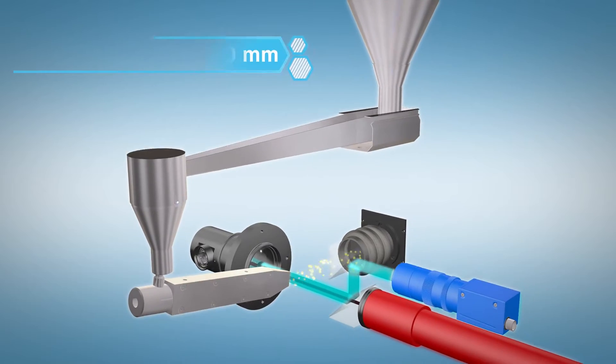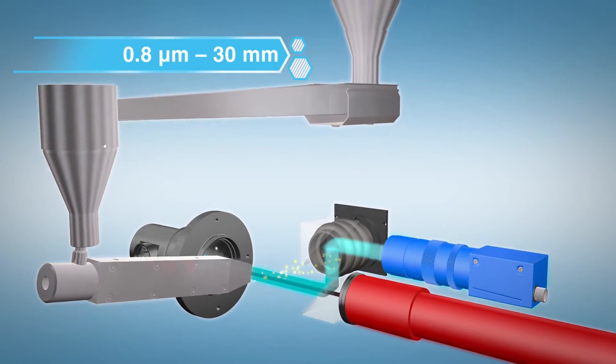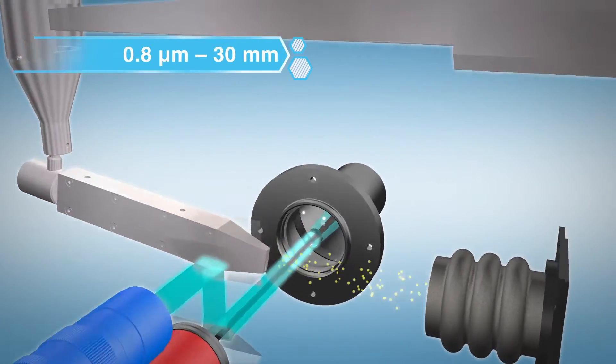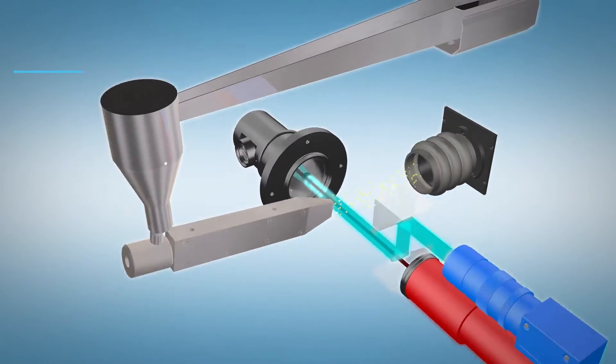Depending on the instrument, particles in a size range from 0.8 microns to 30 millimeters are characterized as powders, granules, or suspensions.